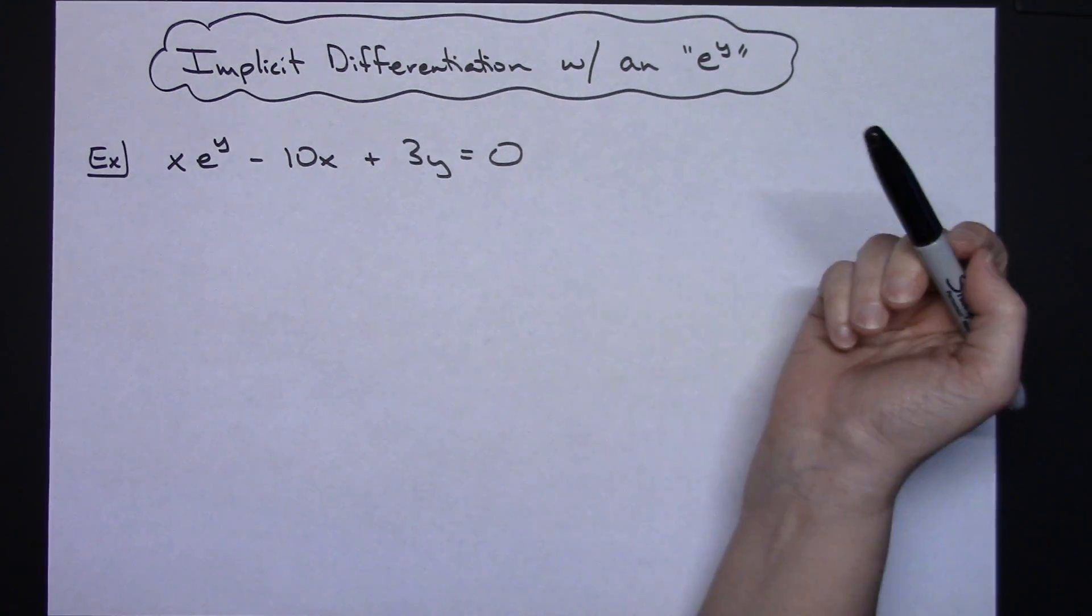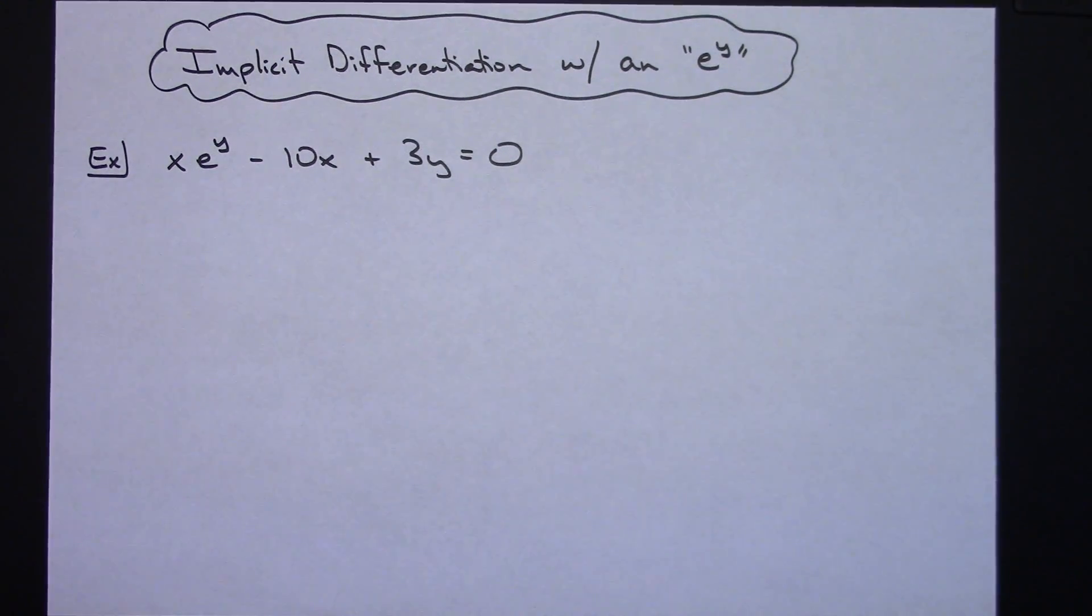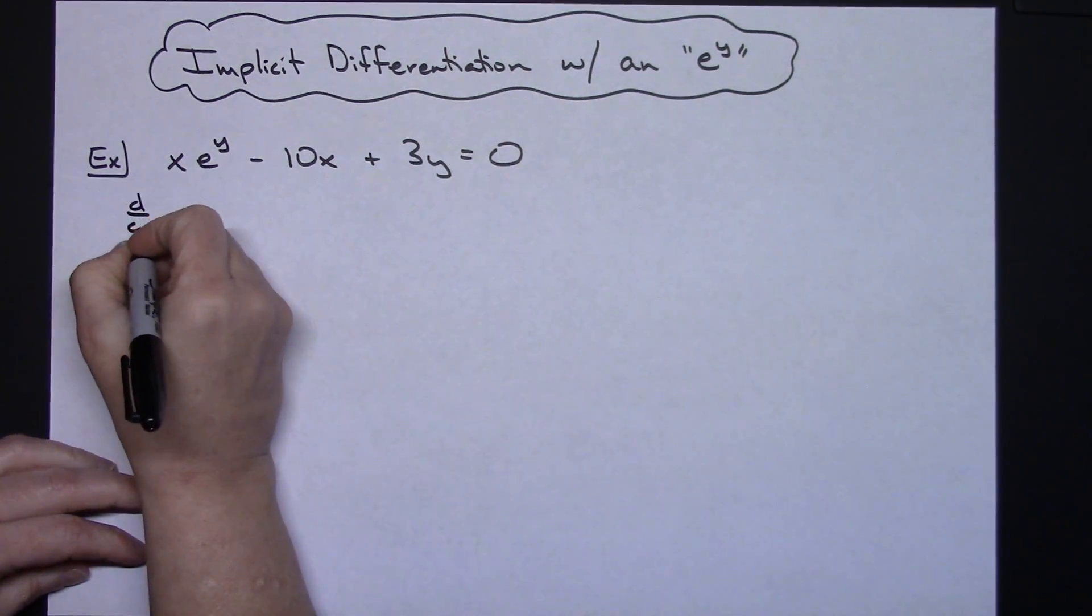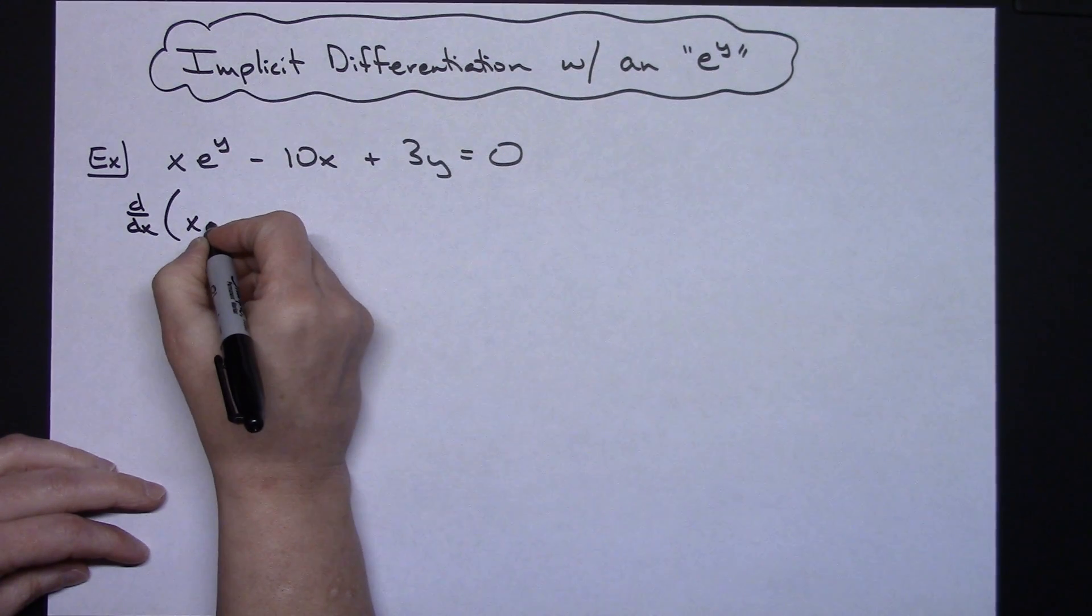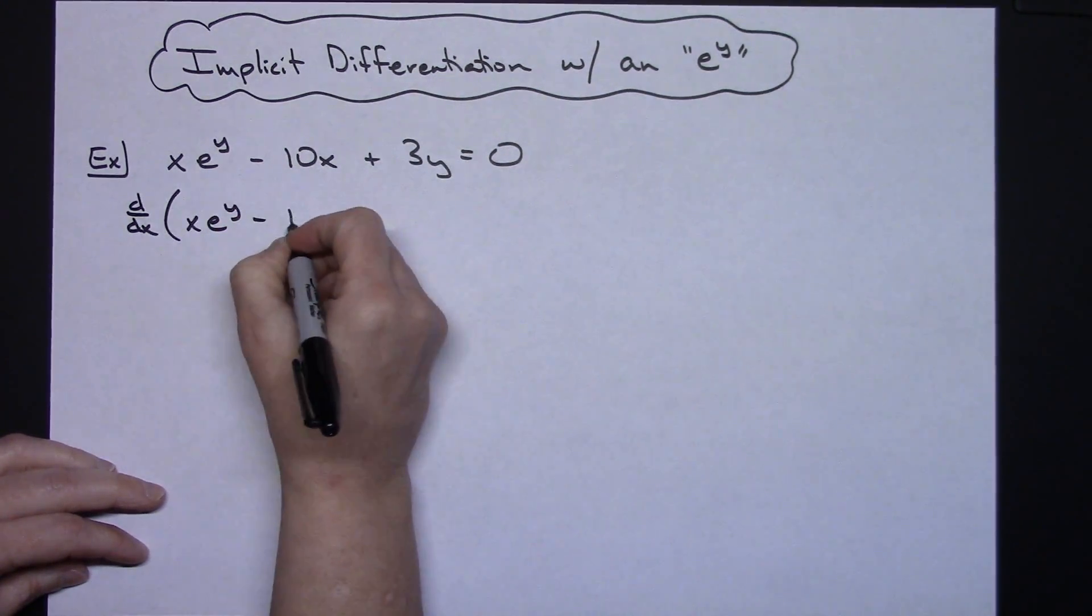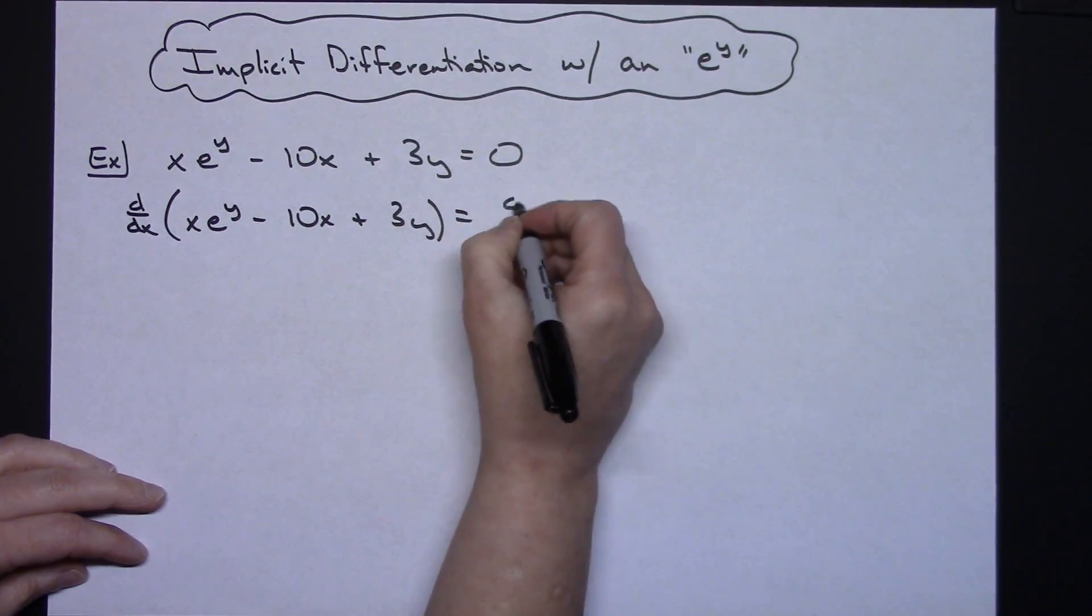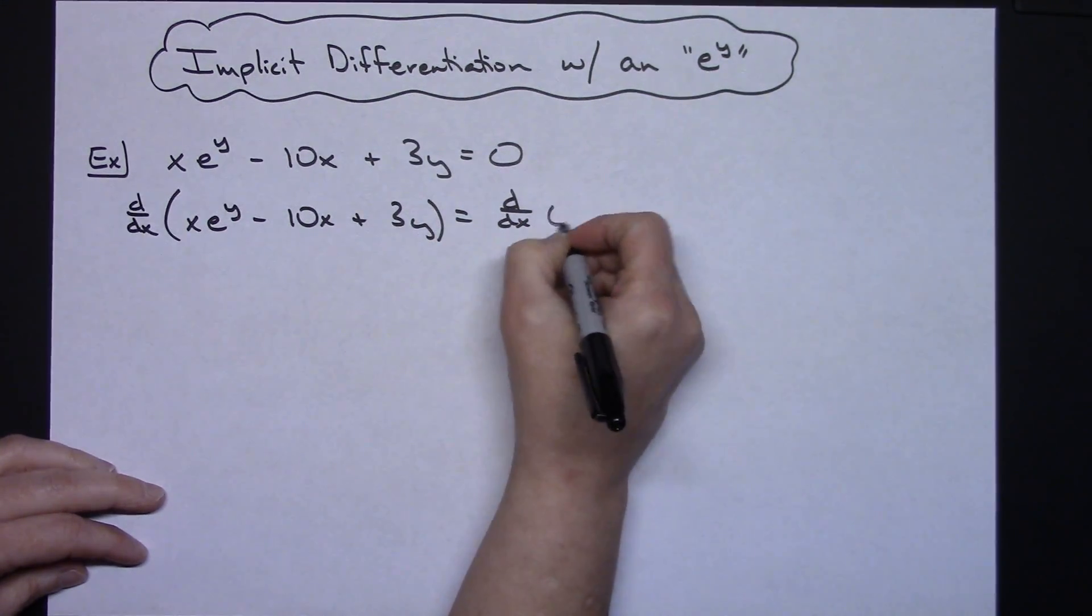So to start with, we're going to take the derivative of both sides. I'm going to show d/dx of the left-hand side, which would be x e to the y minus 10x plus 3y, and then also taking that d/dx of the right-hand side.